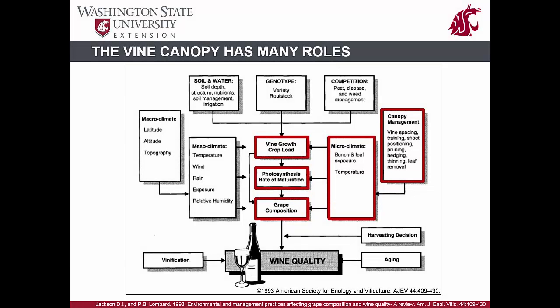The canopy of a grapevine serves many functions. It is necessary for the survival of the vine itself and can indirectly influence wine quality. Canopy management directly influences the microclimate or the environment immediately surrounding clusters and buds, such as temperature and humidity. Cluster exposure to sunlight as a result of intentional canopy management will alter cluster temperature, which can influence the rate of fruit maturation and can have profound impacts on the berry and juice composition. Even though canopy management has a large impact on vine health and fruit quality, it is still one of the more challenging areas in vineyard management.